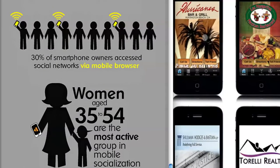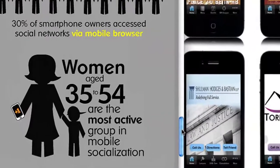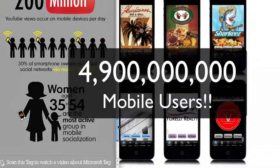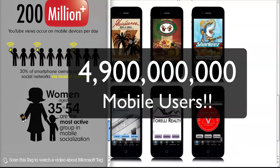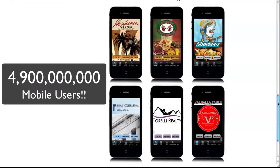30% of smartphone owners have access to social networks via their mobile browser. Women aged 35 to 54 are the most active group in social mobile socialization and they're the big buyers and decision makers. There are 4.9 billion mobile users compared to about a billion PC users worldwide — it's just unbelievable stats. Your customers are there, and I'm going to get into why it's important to have a mobile app for your business.